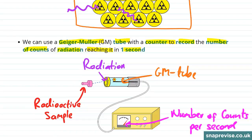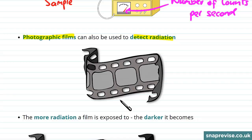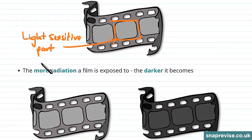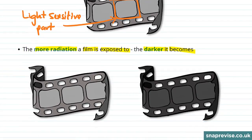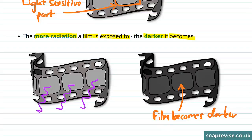Now this isn't the only way to see how much radiation a sample is giving out. Photographic films can also be used to detect radiation. Here we've got a photographic film and the part which is sensitive to radiation is this light sensitive part here. We can use these photographic films to detect radiation because the more radiation a film is exposed to, the darker it becomes. So by seeing how dark the film has got, we can see how much radiation is being emitted towards it.